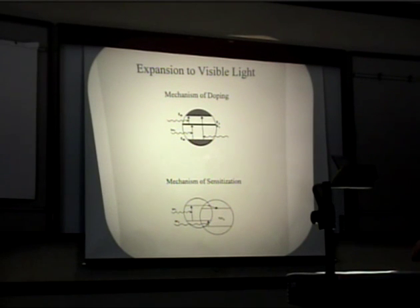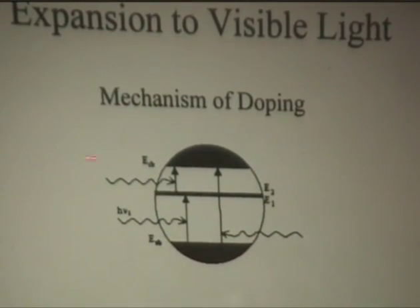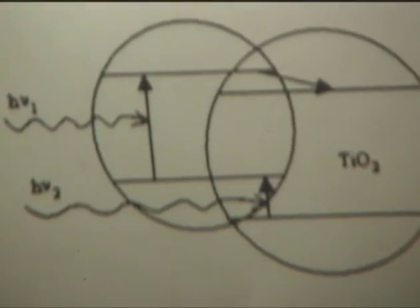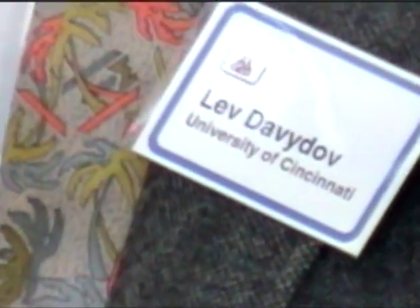What can we do to expand the working range of a photocatalyst? The first approach we can follow is to dope it, as any electrical engineer would do — implant a foreign metal ion into the semiconductor. This creates two energy gaps instead of one: two gaps of smaller energy which can utilize two lower-energy or higher-wavelength photons and achieve the same result as creation of one hole and one electron. An alternative approach is called sensitization, where we don't implant anything or modify the photocatalyst particle itself — we just load something onto it.